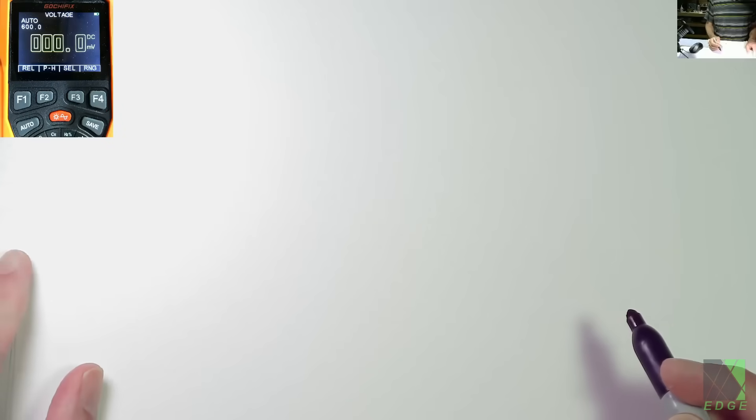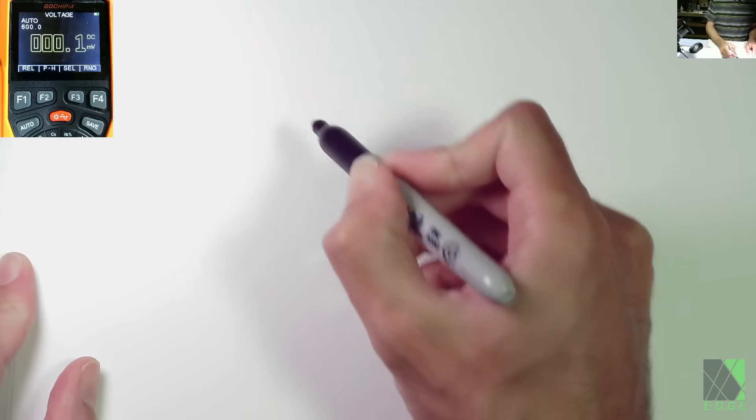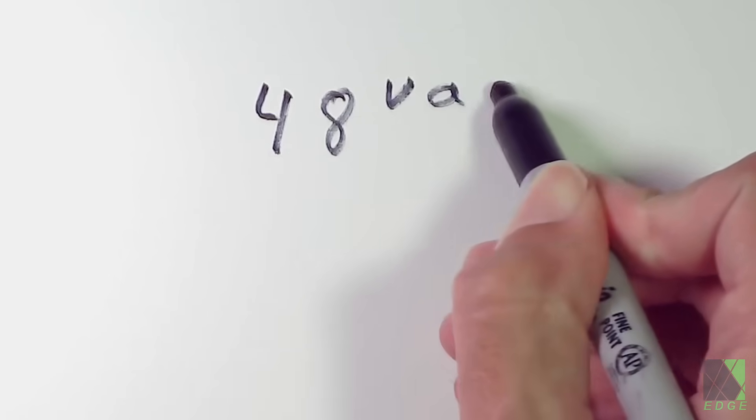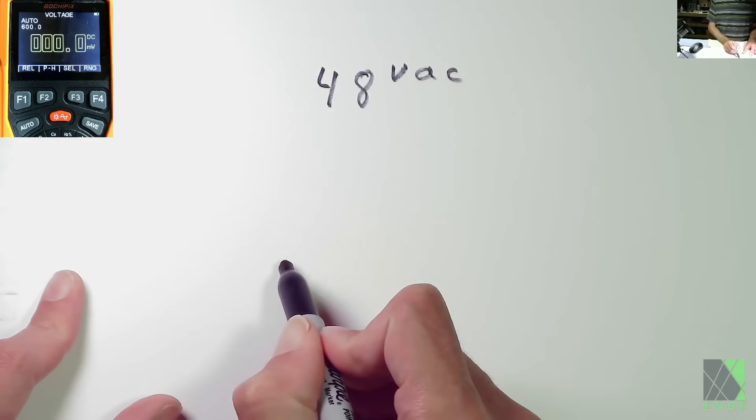Let's start by just assuming that we're working with 48 volts AC and 48 volts DC. So let's write down 48VAC and 48VDC.